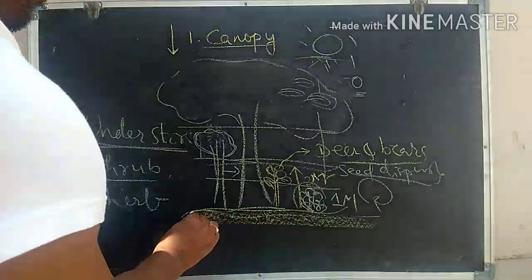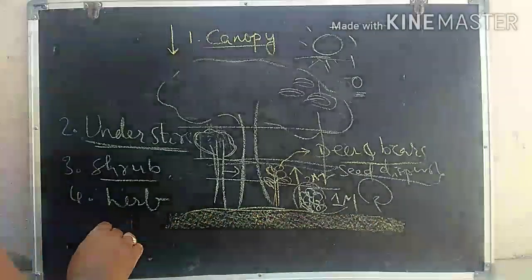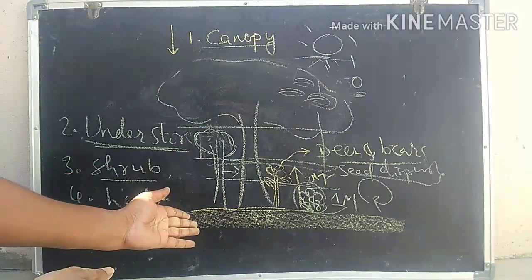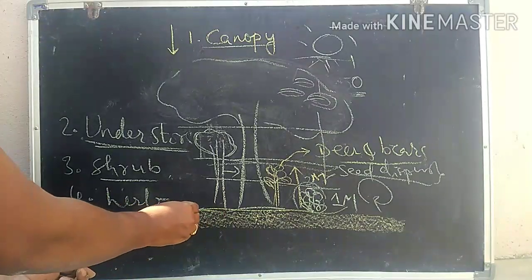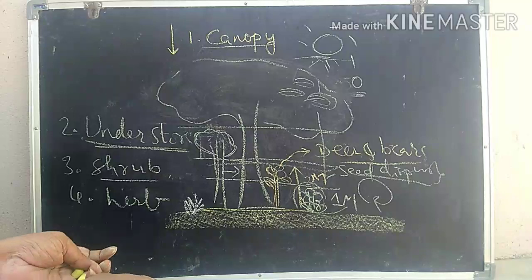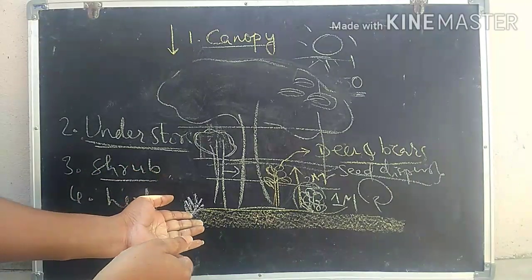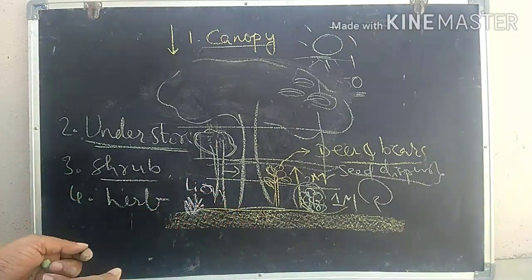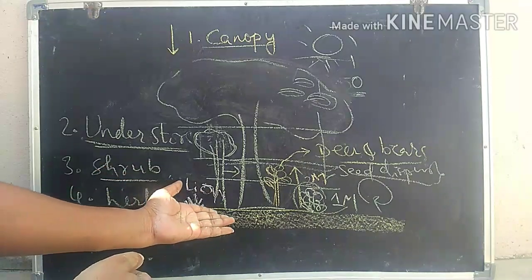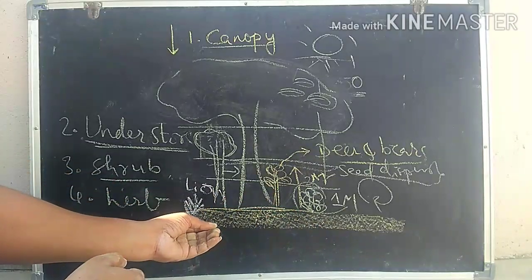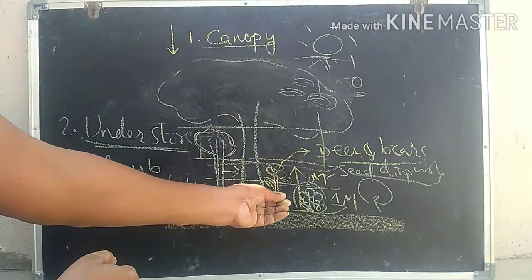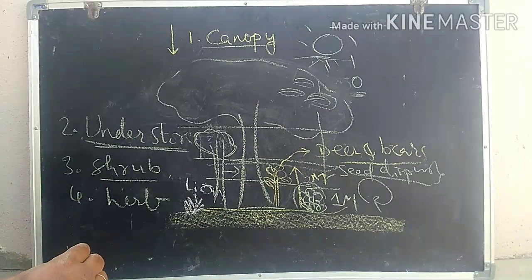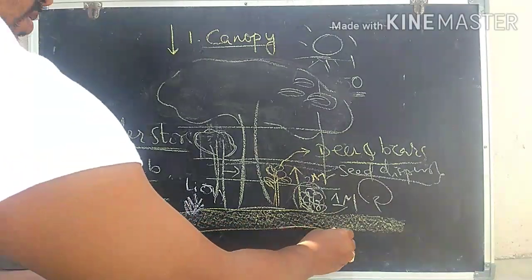The forest floor is the ground or soil layer present at the bottom of the forest. It is filled with flowerless or leafless plants like mosses and ferns. Most animals — like lions, tigers, and bears — are found at the forest floor, as well as earthworms and other ground-dwelling creatures.